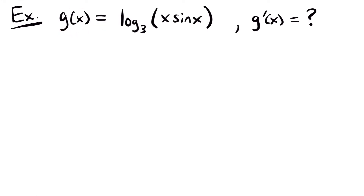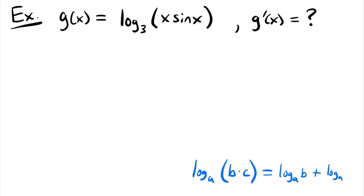For our next example, we have g of x is equal to log base 3 of x times sin x, and we want to find the derivative g prime of x. In order to take the derivative of this function, it's going to be helpful to know the properties of logarithmic functions. One property that's helpful here is that the log base a of b times c is equal to the log base a of b plus the log base a of c. So if we have two values being multiplied together inside the log function, we can split that into two log functions. For our function here with log base 3 of x times sin x, if x is b and sin x is c, we can split this up into two separate logs.